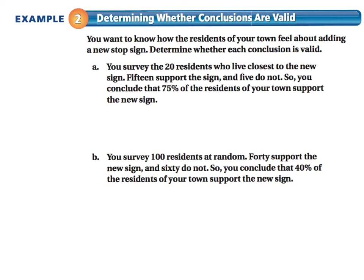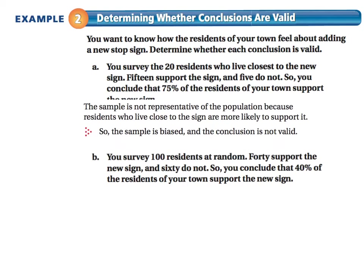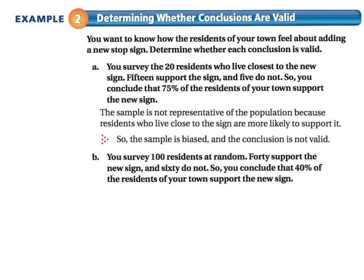In example two, you want to know how the residents of your town feel about adding a new stop sign. In part A, you survey the 20 residents who live closest to the new sign: 15 support the sign and 5 do not, so you conclude that 75% of residents support the new sign. That conclusion is not valid, because residents who live closest to the sign are most likely biased either for or against it. The sample is biased, so the conclusion is not valid.